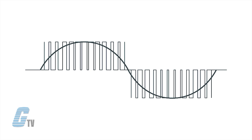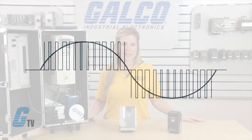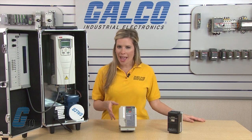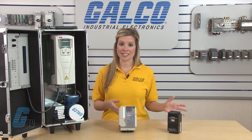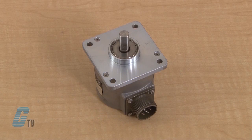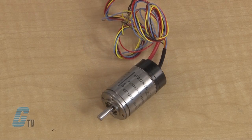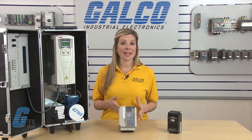The AC motor interprets this as an AC sinusoidal current waveform and moves as if it were such. By increasing or decreasing the pulse width through the drive, the AC motor responds. This particular system is an open loop vector system, and many VFDs are compatible with feedback devices such as encoders, hall effect pickups, and resolvers. The addition of any of these devices makes up a closed loop system.